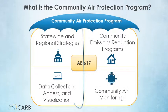The Community Air Protection Program is a statewide program designed to address air pollution at the community level, developed in response to AB 617. The program includes a variety of statewide and community scale actions to reduce pollution and improve our understanding of air quality at the community scale.